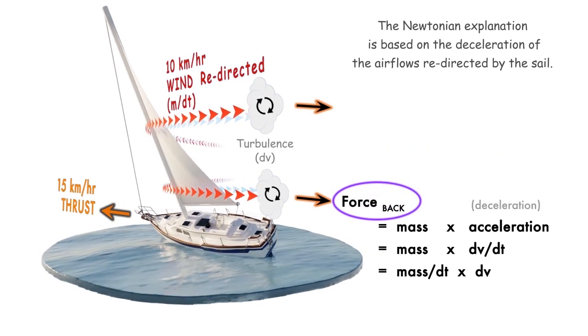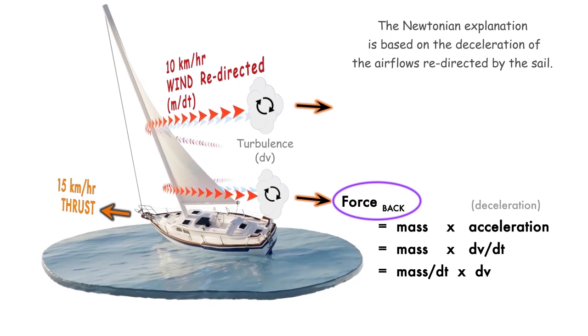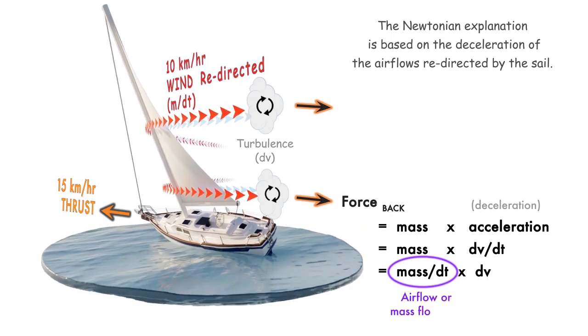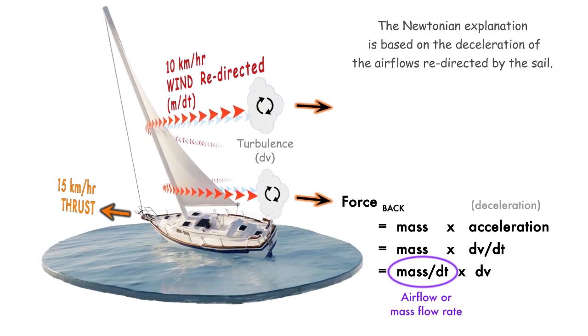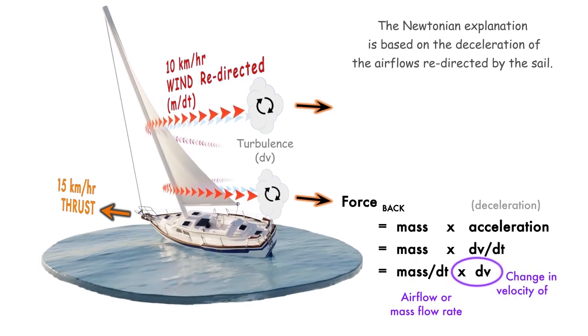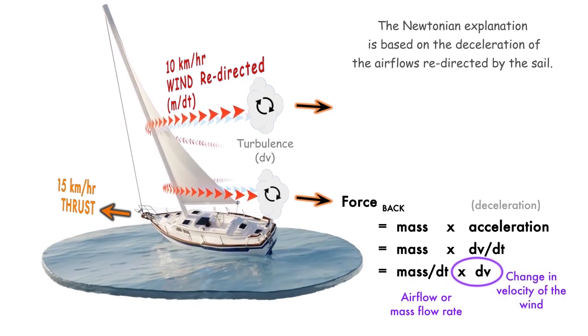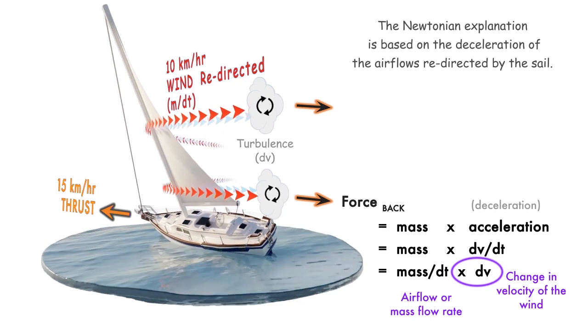According to Newton's laws of motion, the backward force generated equals the mass of air redirected each second by the sail times the change in the velocity of the air as the wind decelerates and creates turbulence.